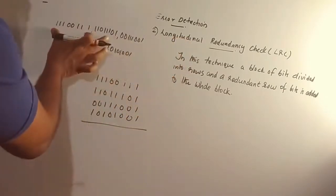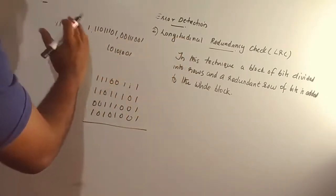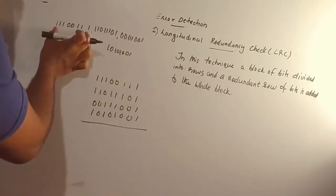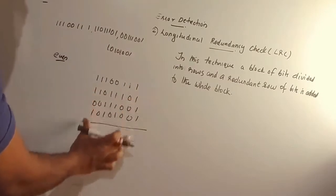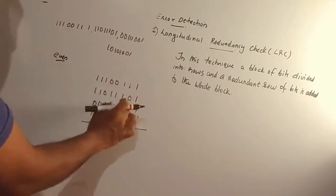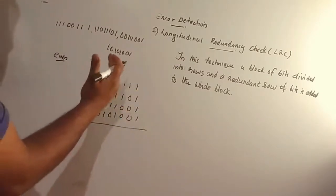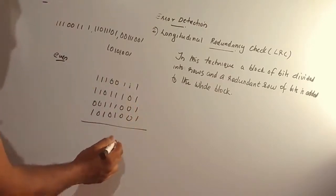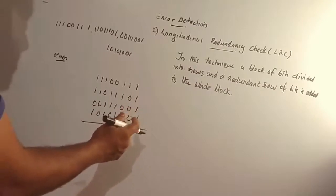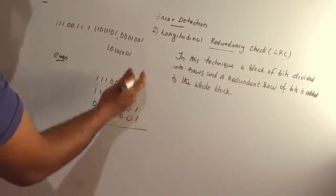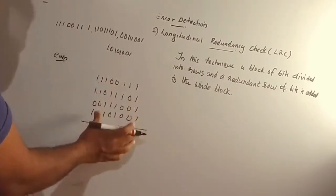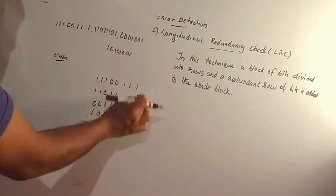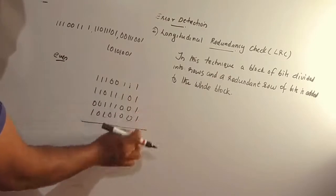Longitudinal redundancy check works with groups of bits. We divide the group of bits into rows and columns. We are provided the group of bits in rows and columns, and we calculate parity for each row and column.